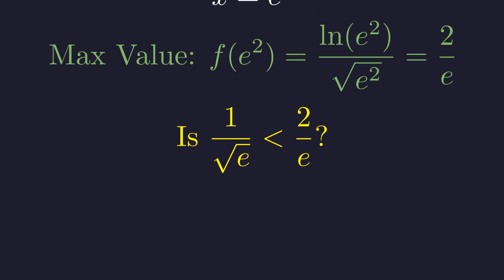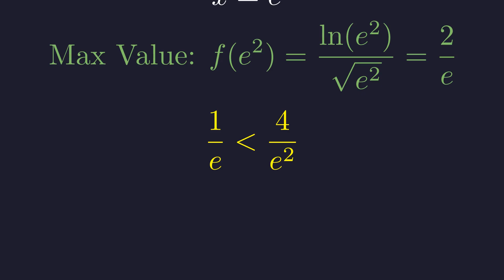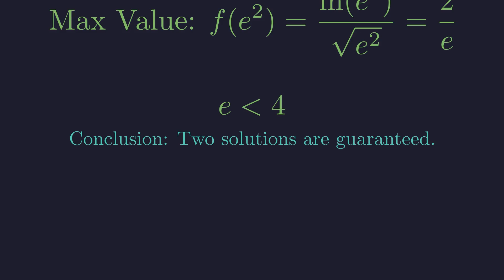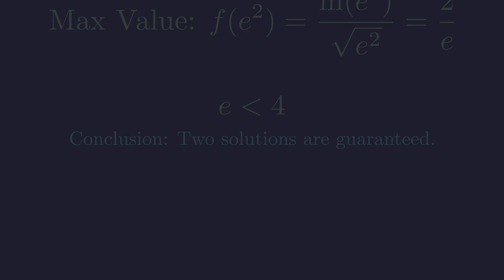For two solutions to exist, the constant value from our equation must be less than this maximum. Is this inequality true? Since both sides are positive, we can square them without changing the direction of the inequality. Squaring both sides gives 1 over e is less than 4 over e squared. To clear the denominators, we multiply both sides by e squared. This simplifies to the statement that e is less than 4. Since e is approximately 2.718, this is true. Because the line y equals 1 over the square root of e is below the function's peak, it must intersect the curve exactly twice. Our calculus has proven two solutions exist.